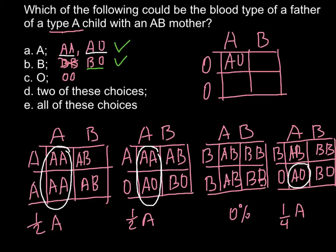And we have here AO, AO, and BO and BO. So that means that, once again, in 50% of the cases, this family would have a child with blood group A. So this blood group also meets our requirement.